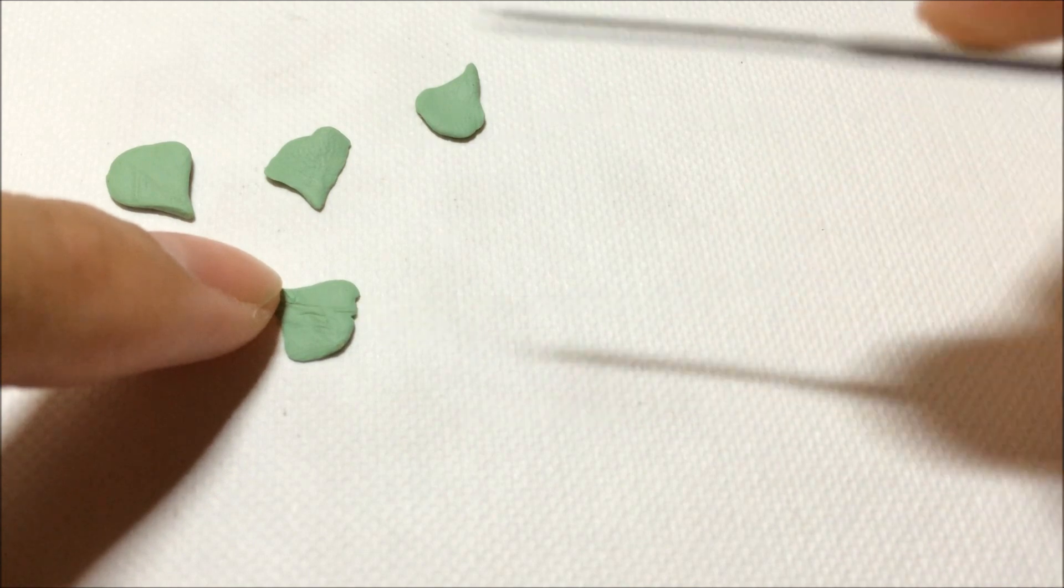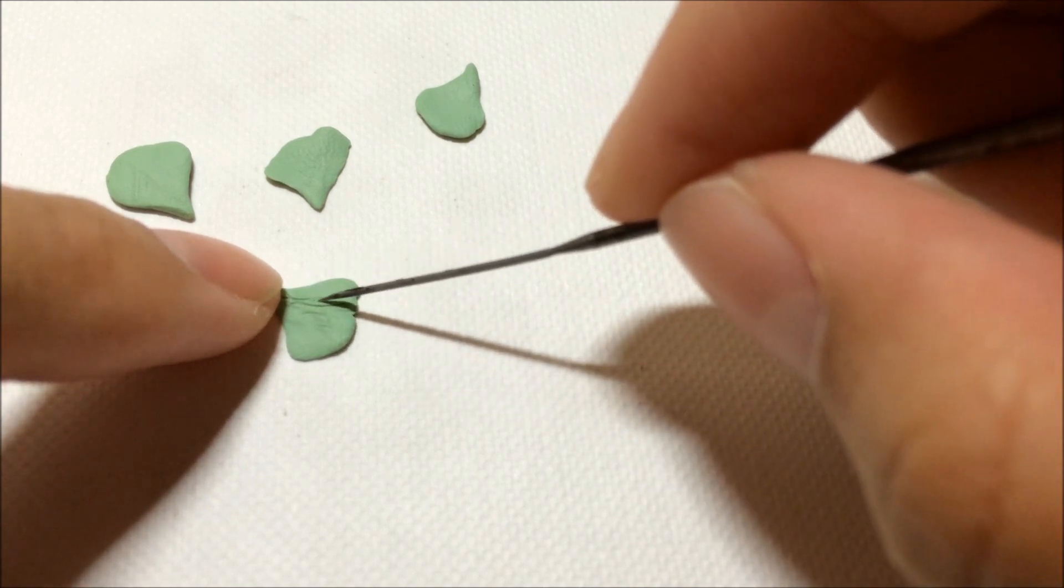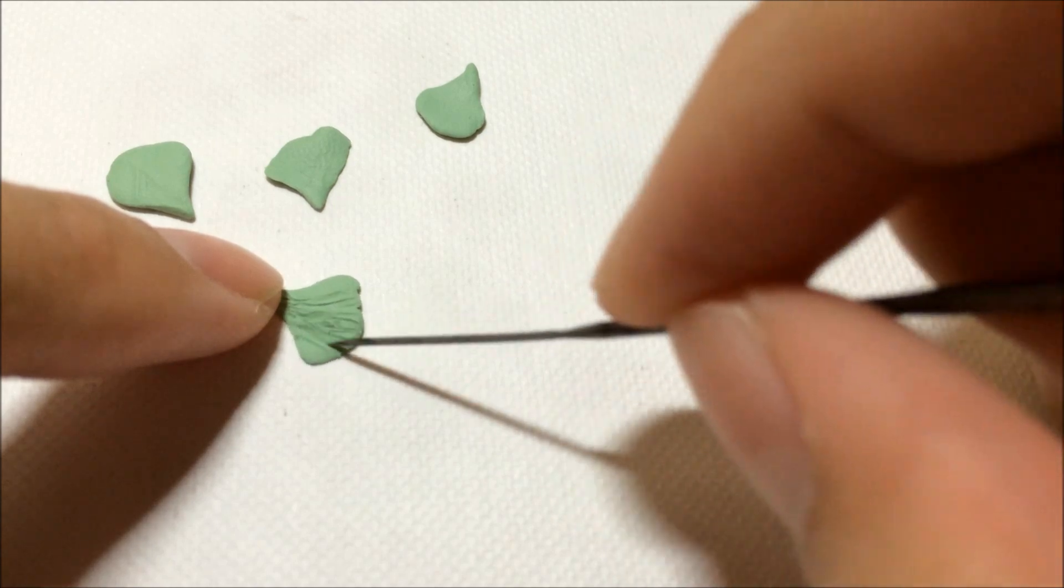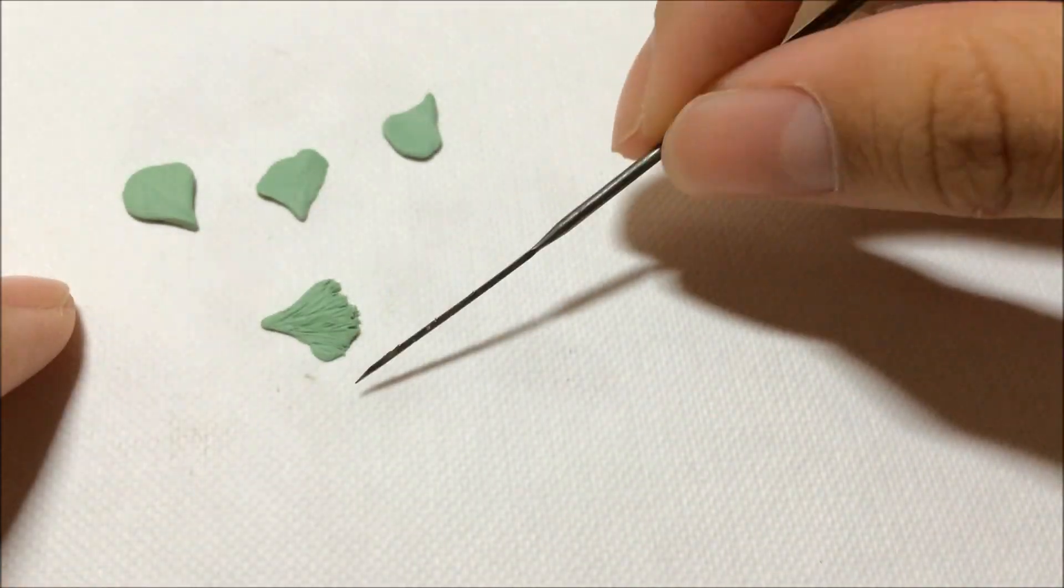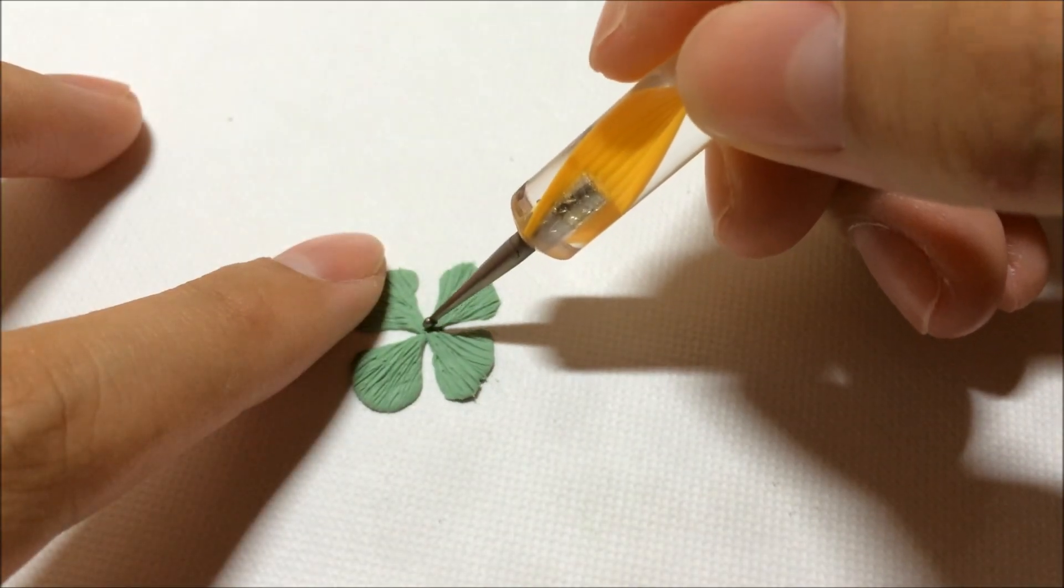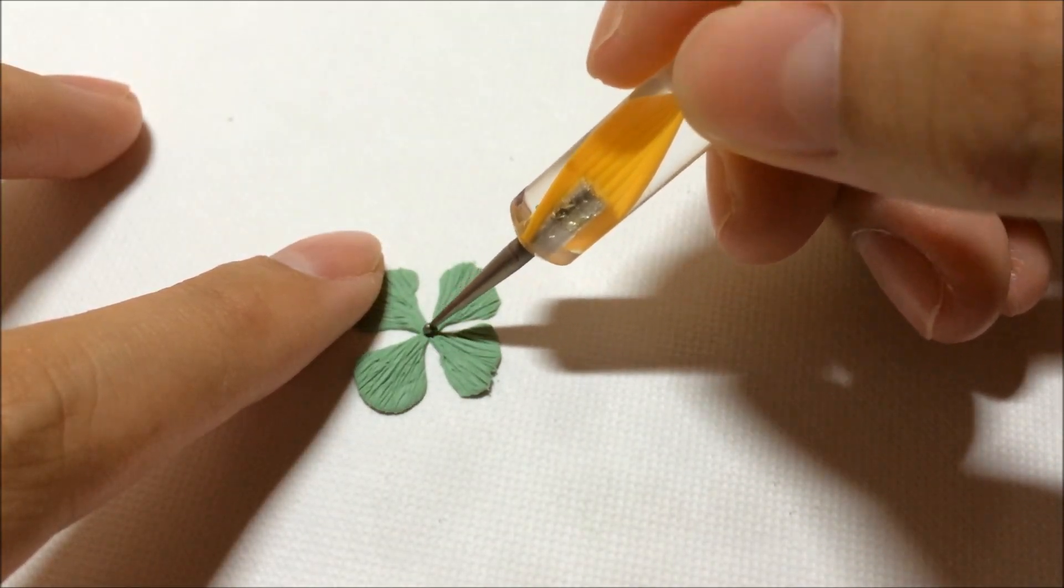After that, grab your needle tool and texture it to give them a realistic look like the actual leaf. After you're done, put it aside. This is how it looks like. Just blend in with your dotting tool or your blending tool.